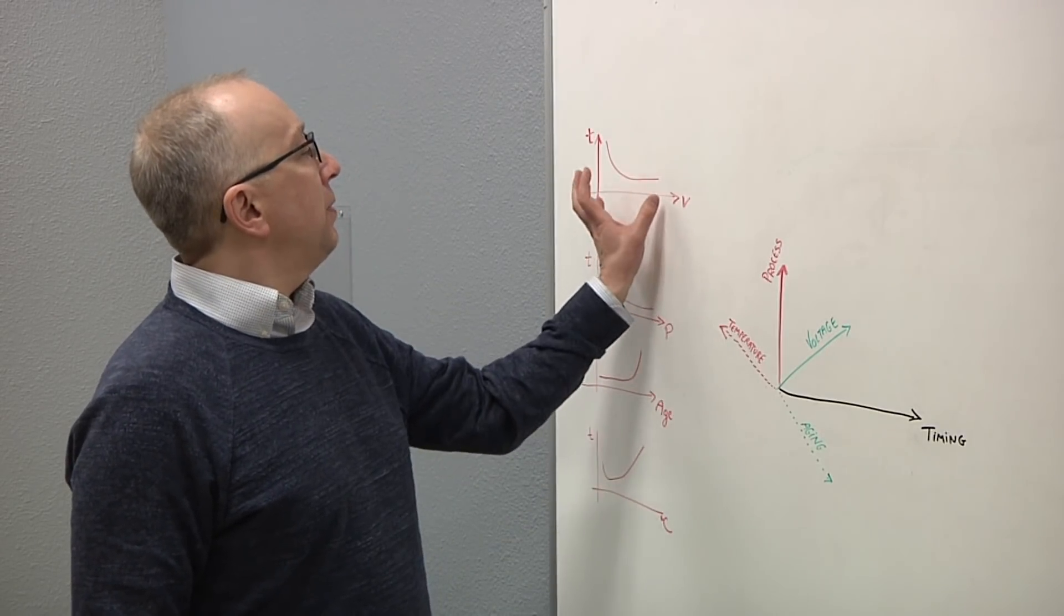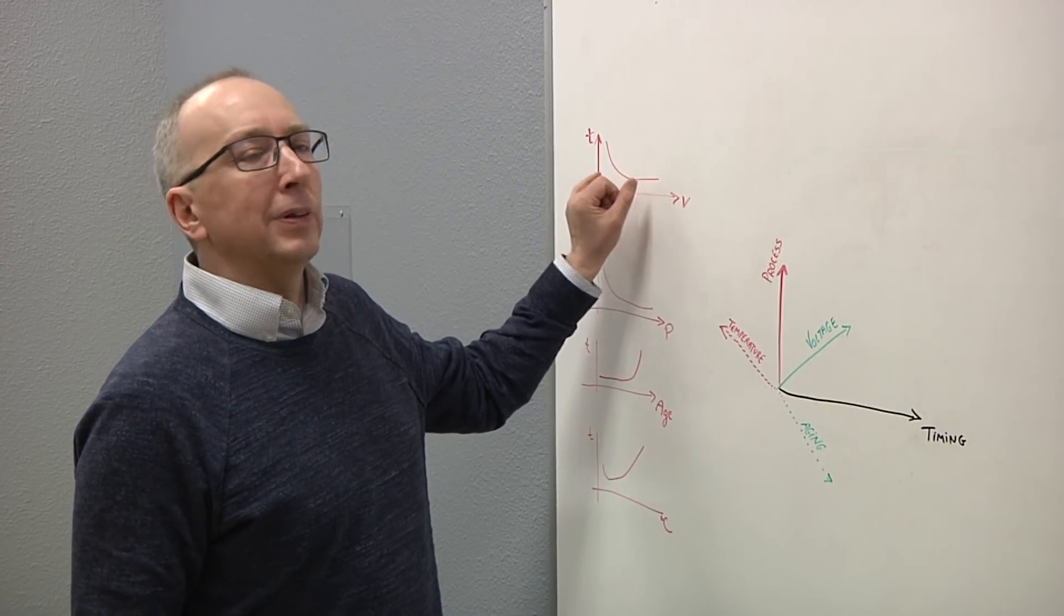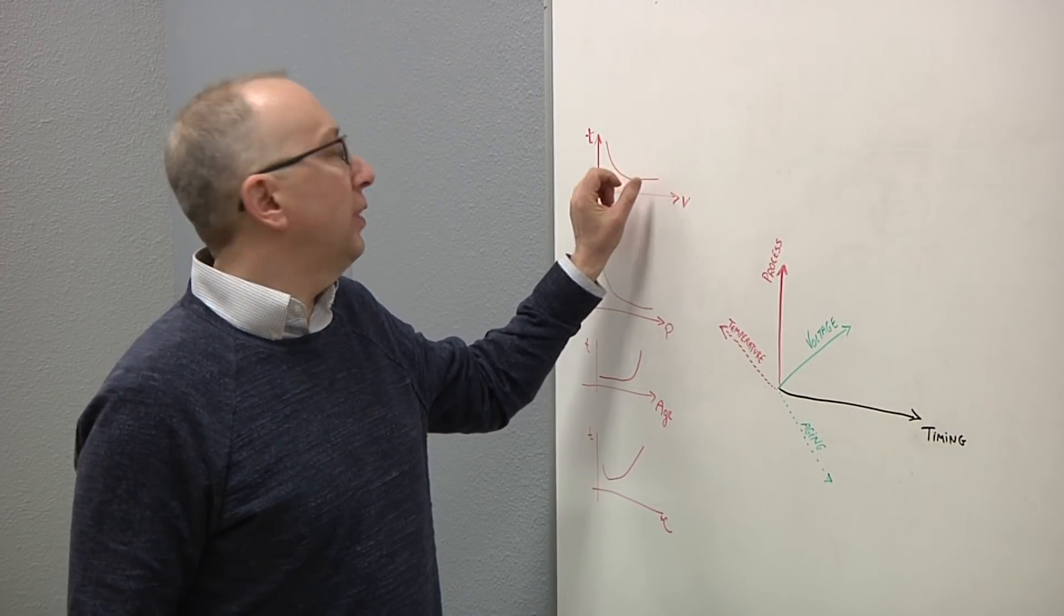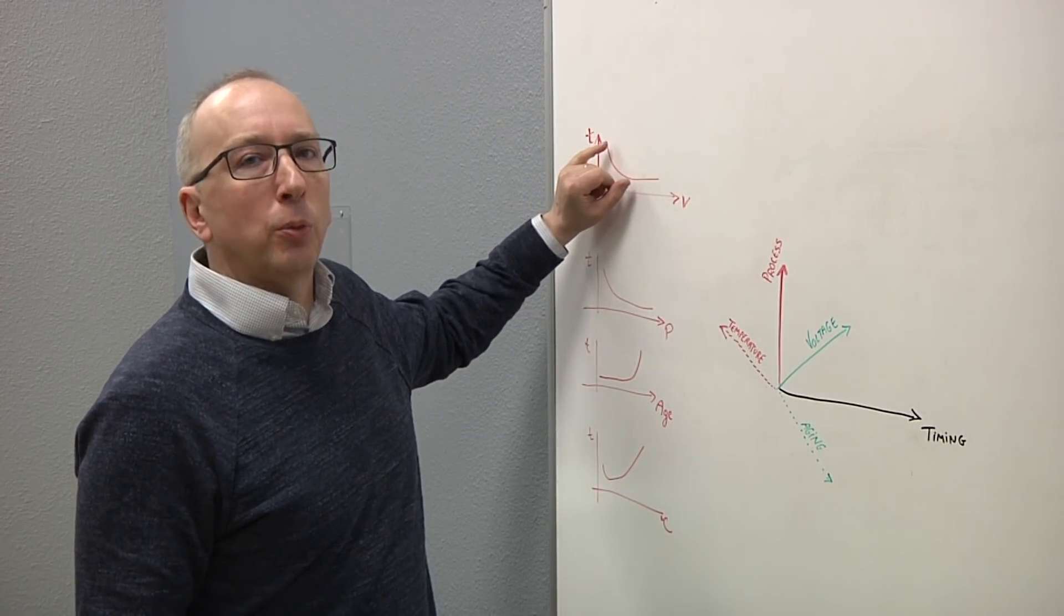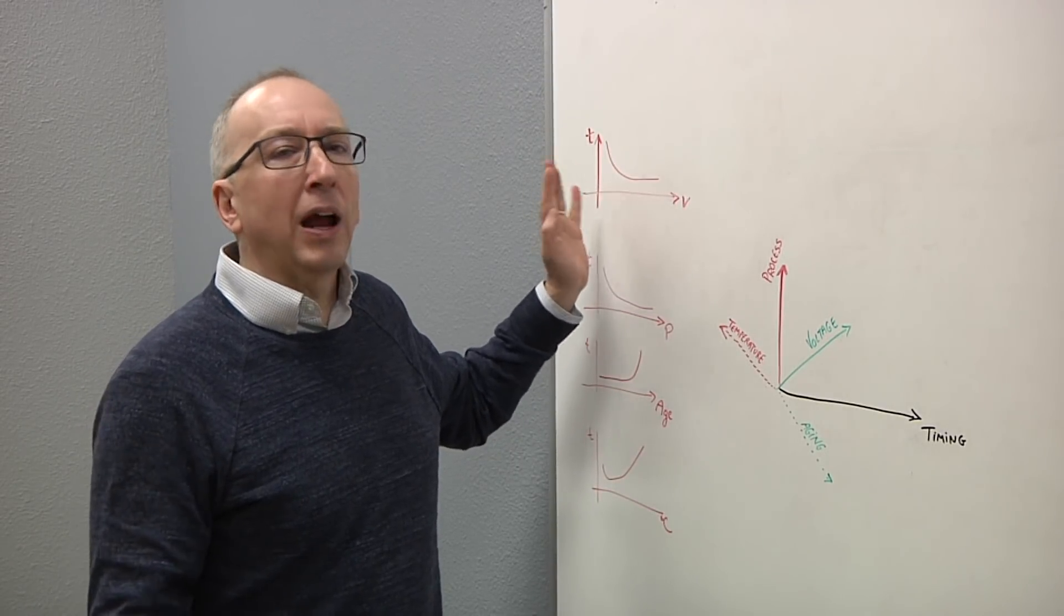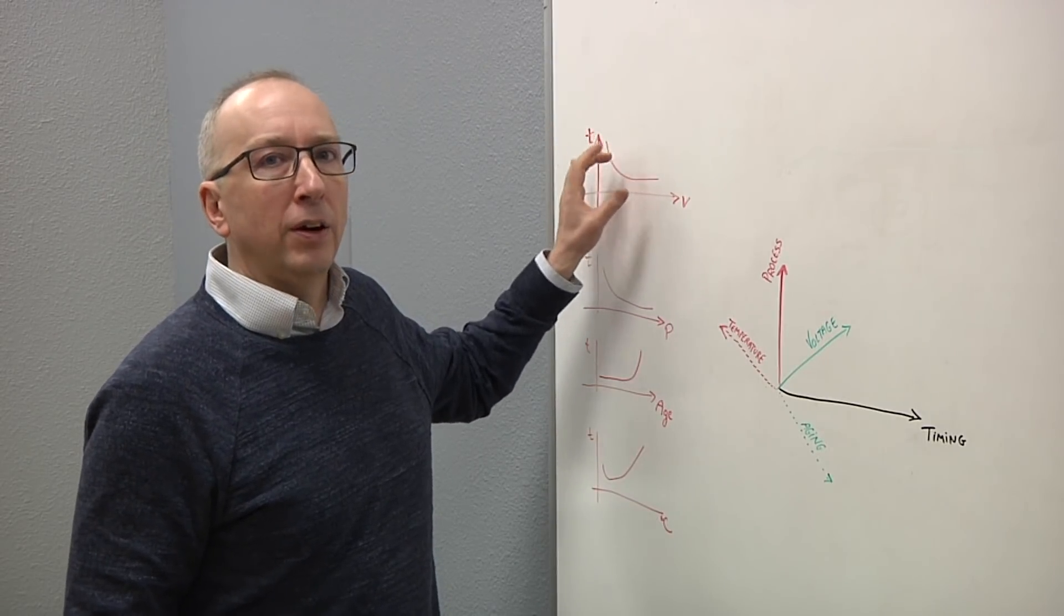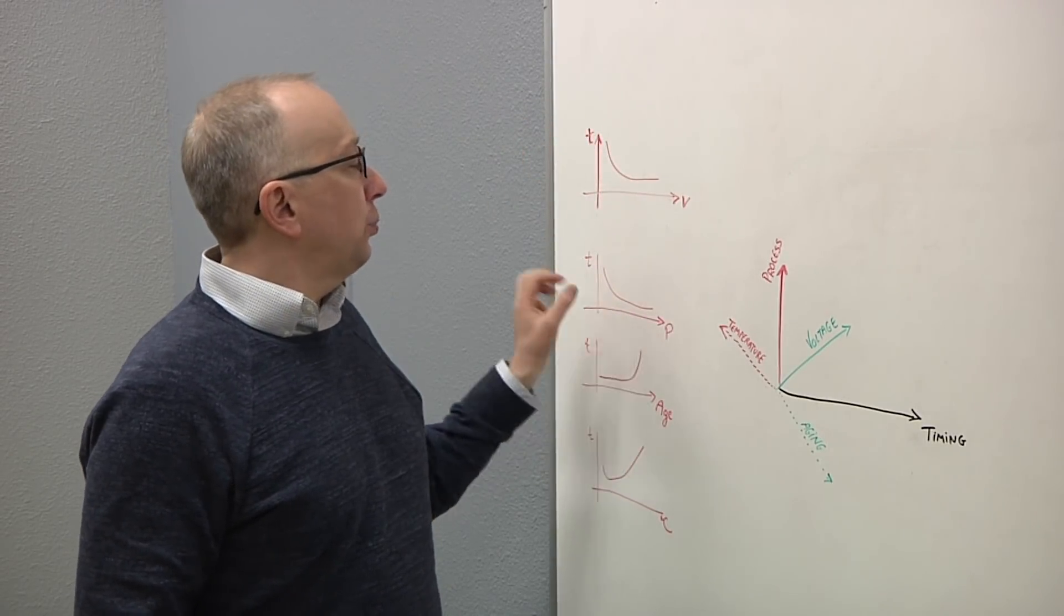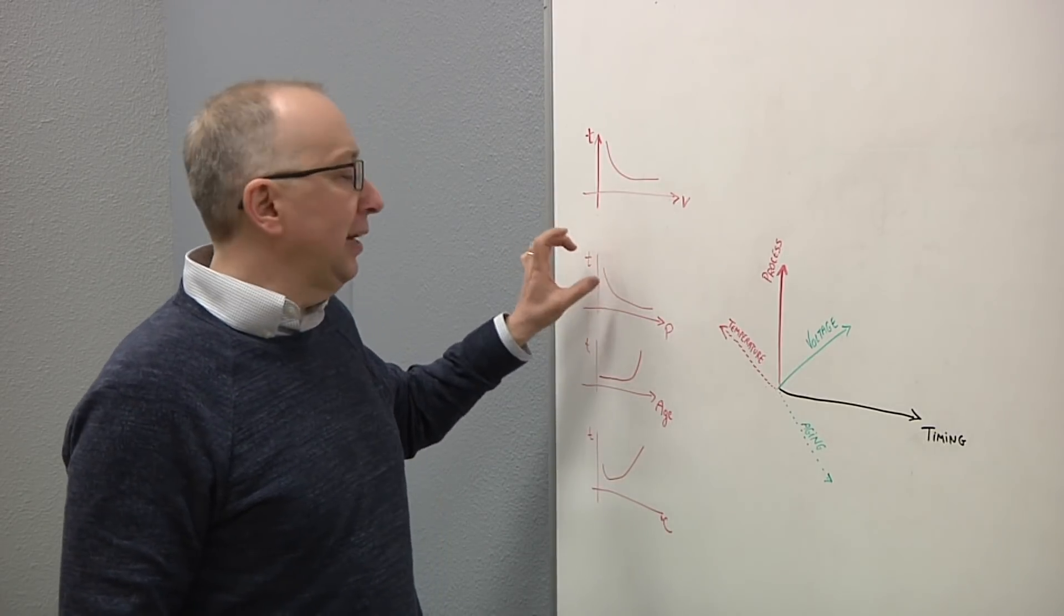So we've moved from the safe linear part of the curve to the extremely non-linear exponential side of the world. We've moved voltages close to threshold, or most, many designs now have sub-threshold operation. This is an exponential regime over here. The same thing in process. We're trying to get as close to the limits of the process as we can. Again, it's a highly non-linear region.